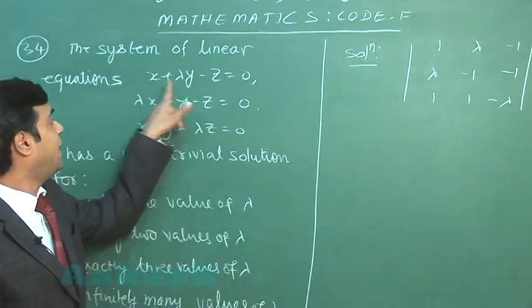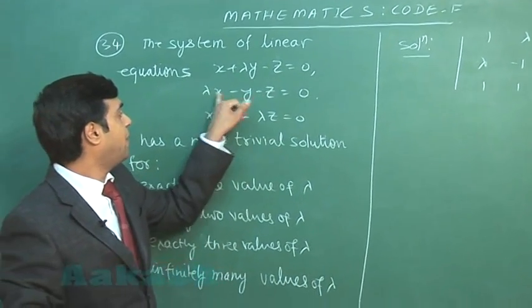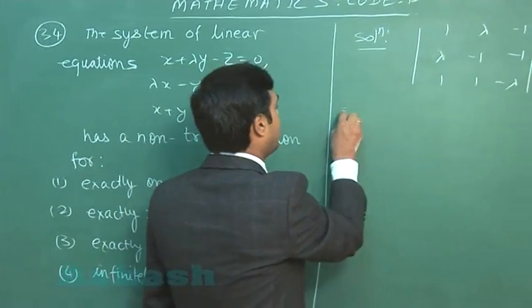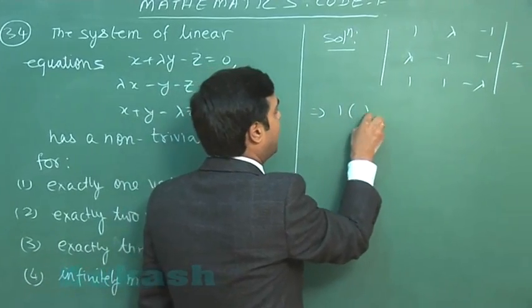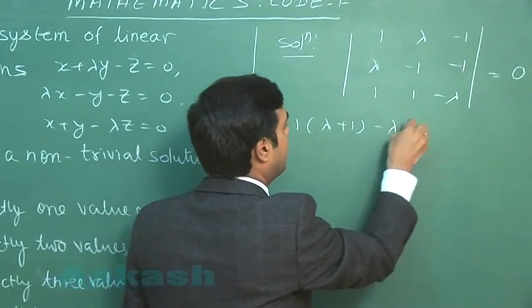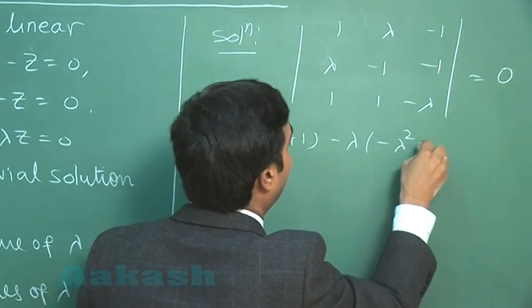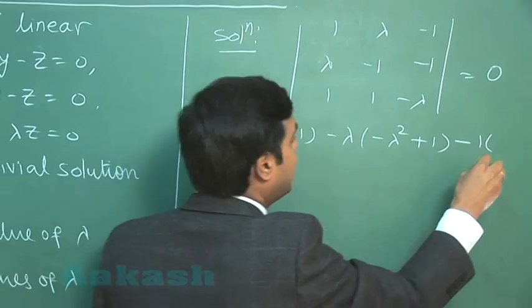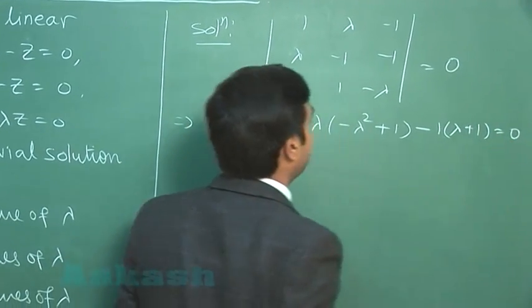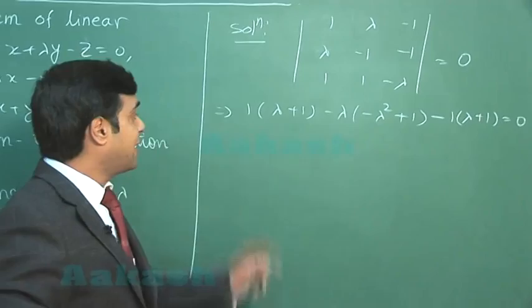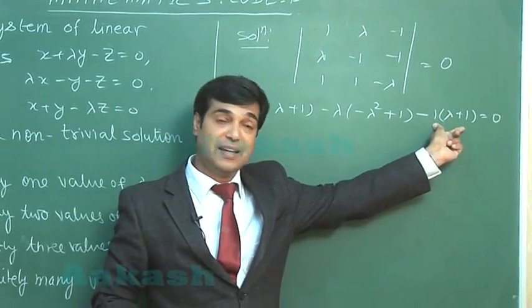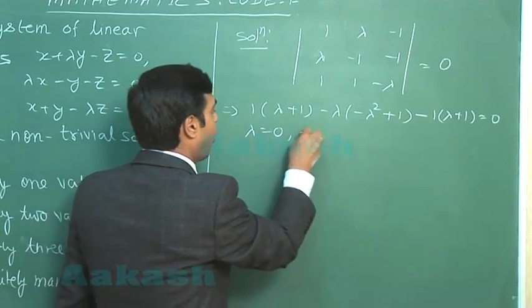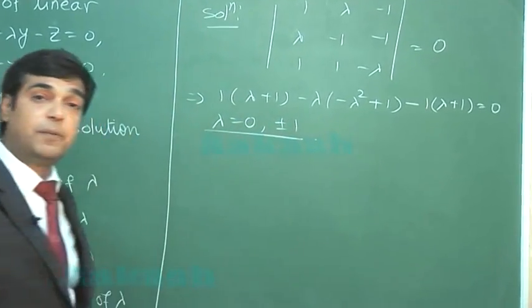So, the determinant is 1, λ, -1; λ, -1, -1; 1, 1, -λ. Simplifying, we get 1 multiplied with (λ+1) minus λ multiplied with (-λ² + 1) minus 1 multiplied with (λ + 1) = 0. We can see λ+1 minus λ+1 cancelled out. We simply get the values as 0 or ±1, three solutions are obtained.